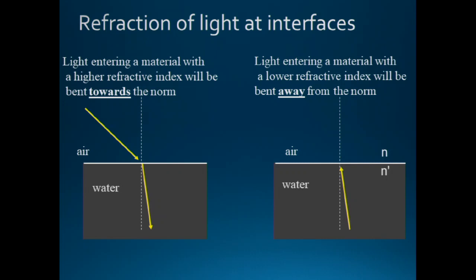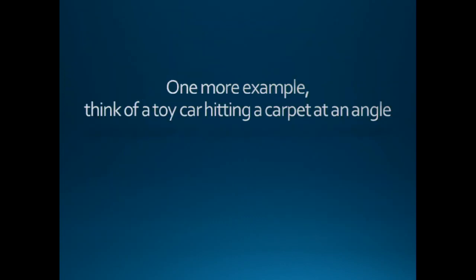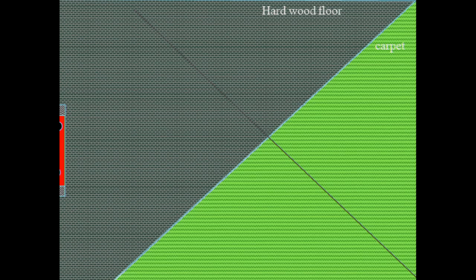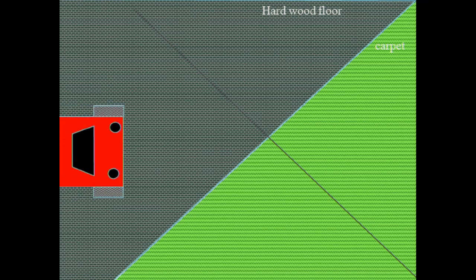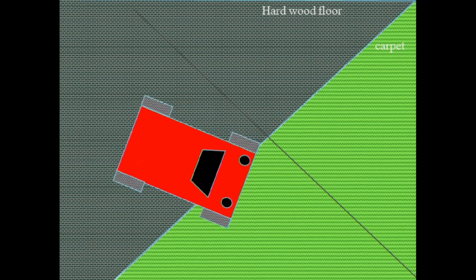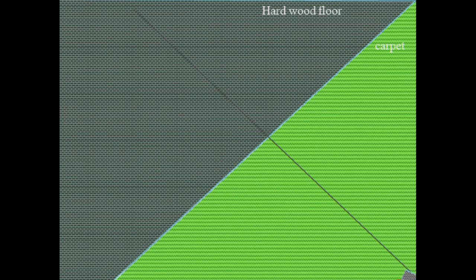When a light ray leaves water — a denser medium — and enters a less dense medium, it gets bent away from the normal. Think of a toy car hitting a carpet at an angle on a hardwood floor: two different indices of refraction. When the car encounters the carpet, it gets bent toward the normal because it enters a denser medium.